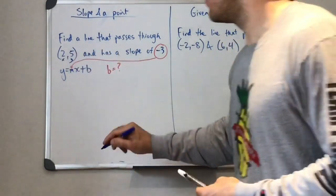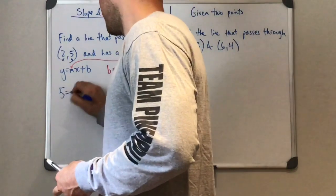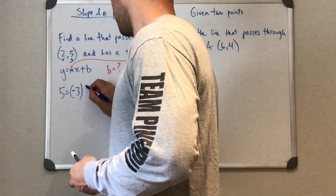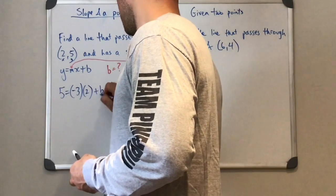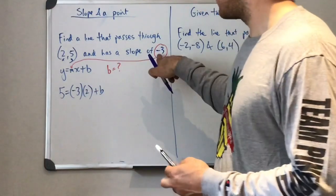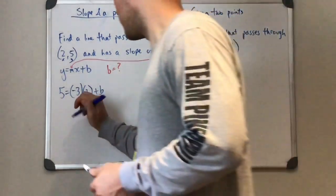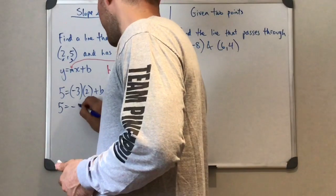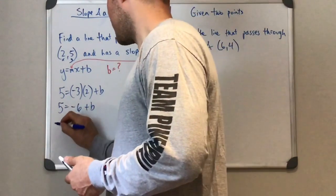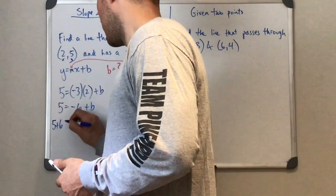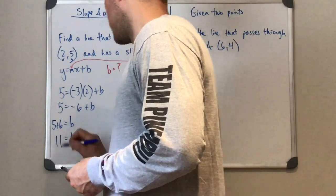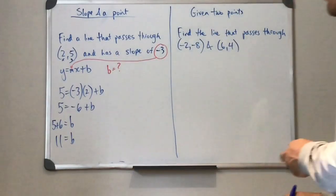So it's always x then y. So we have 5 is equal to negative 3 times 2 plus b. So I took my x, my y, and my slope. Now let's just solve this equation. So we have 5 equals negative 6 plus b. I'm going to move this negative 6 to the other side. I'm just going to change it to a positive 6.